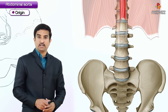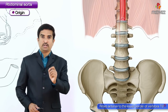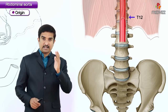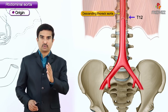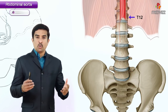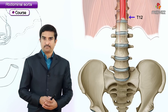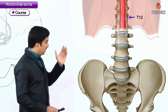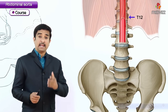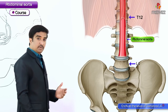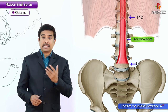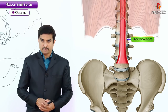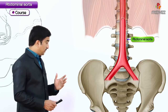The origin of the abdominal aorta is anterior to the lower border of the T12 vertebra, and it is the continuation of the descending thoracic aorta. Its course runs through the abdomen anterior to the vertebral bodies, ending at the level of vertebra L4, slightly to the left of the midline.